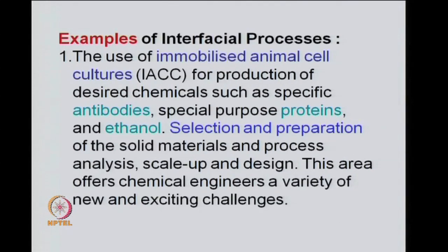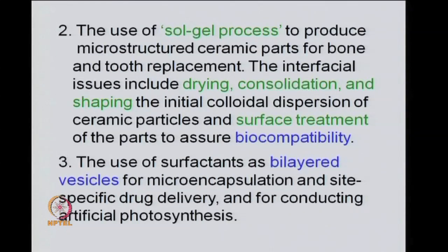We could consider several examples of interfacial processes. One is the use of immobilized animal cell cultures for production of desired chemicals — these could be specific antibodies, special purpose proteins and ethanol — including selection and preparation of solid materials and process analysis, design and scale up. A second example is the use of the sol-gel process to produce microstructured ceramic parts for replacement of bone and tooth, where the interfacial issues include drying, consolidation and shaping the initial colloidal dispersion of ceramic particles, and surface treatment of the parts to assure biocompatibility.